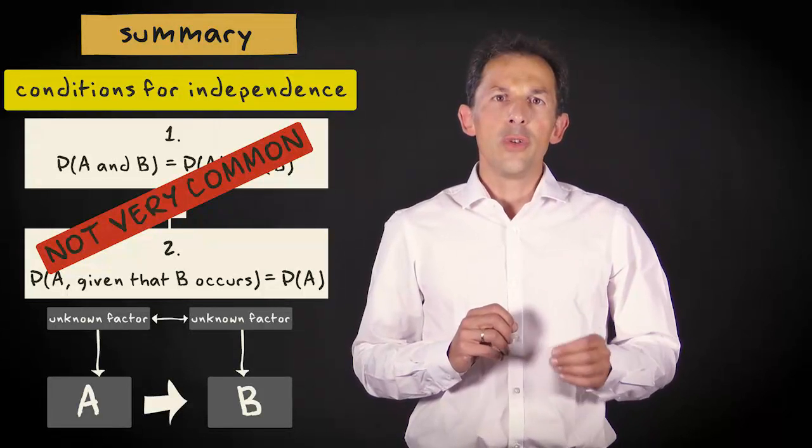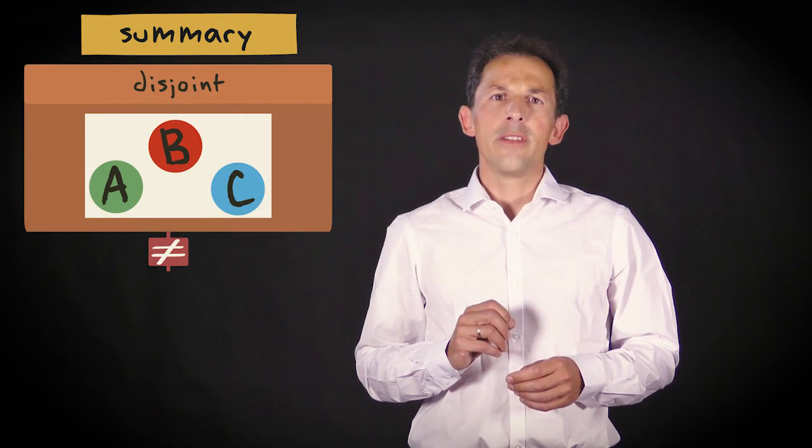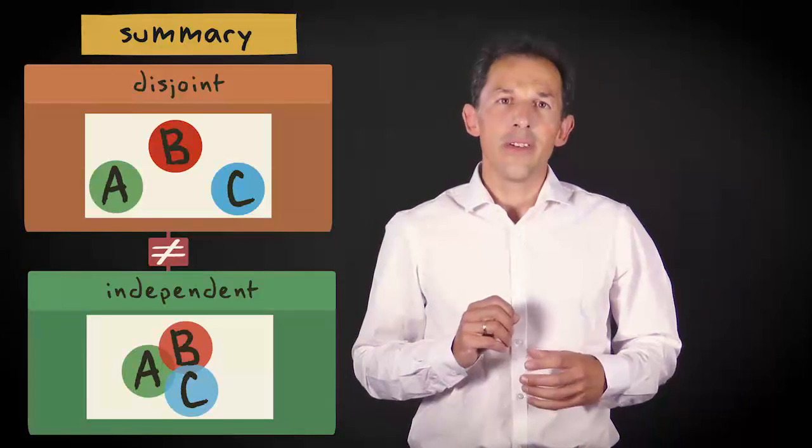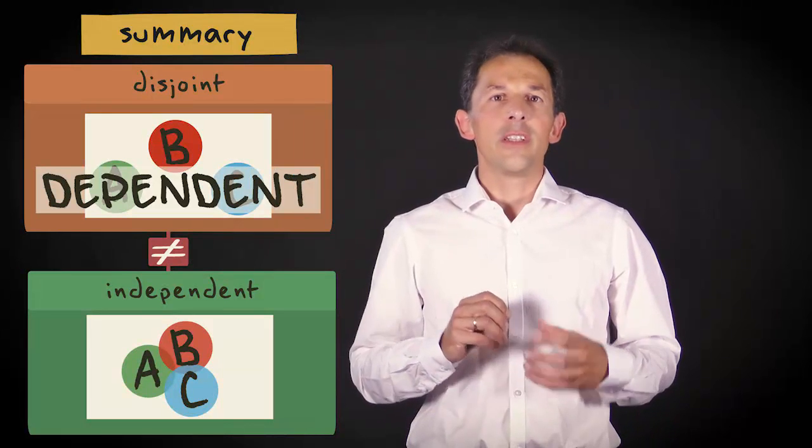And finally, you shouldn't confuse the term disjoint event and independent event. If two events are disjoint, it implies that they are dependent, whereas if two events are independent, it implies that they cannot be disjoint.